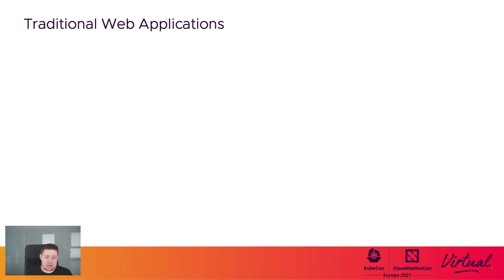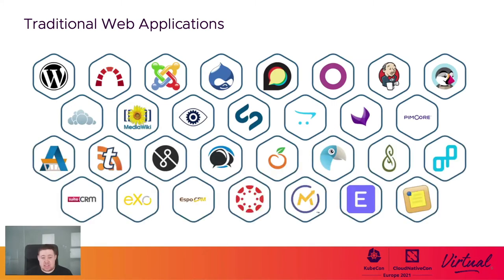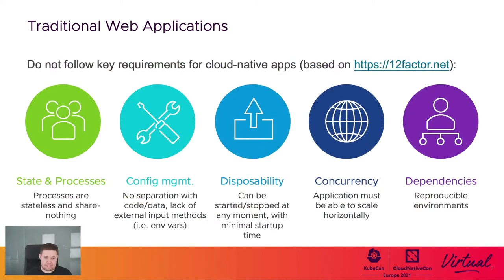Let's talk a bit about traditional web applications. There are so many of them — incredibly popular ones, less popular ones, etc. They are not designed to work in cloud-native environments; they predate that design. So how can we differentiate traditional and cloud-native applications? I have compiled a few basic requirements that we would expect any Kubernetes-native app to meet so they can be deployed without any headache. Traditional applications don't usually meet one or more of these, requiring workarounds and hacks. In some cases, it might even be impossible to solve these problems.